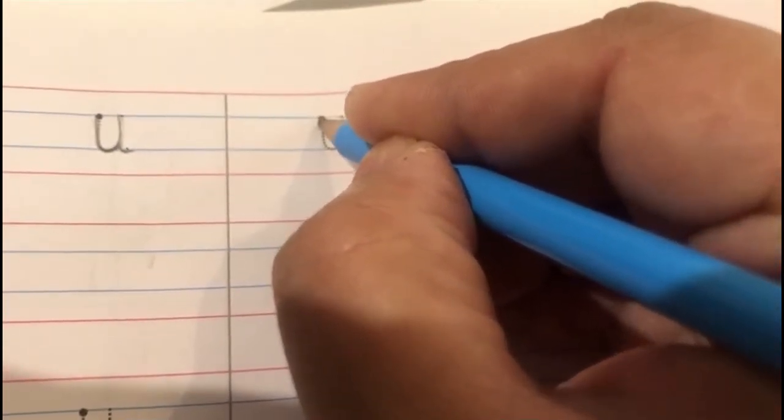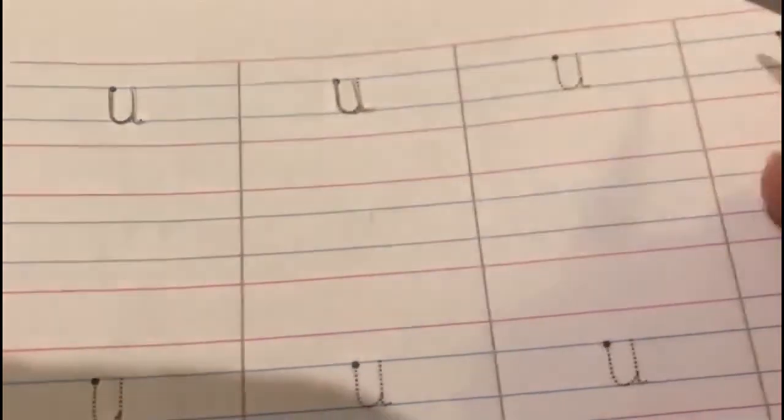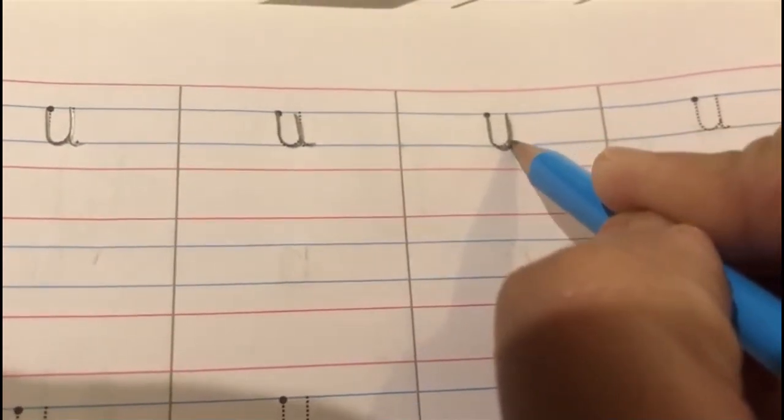down and a tail. Start from the first blue line. Down, lumpity, up, down, tail. Okay. Like this, first, you are going to trace letter u.